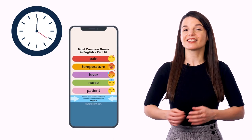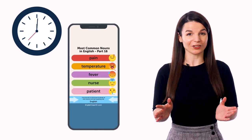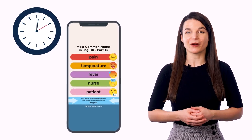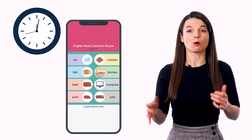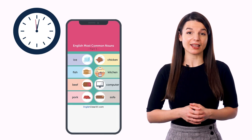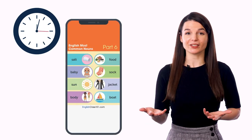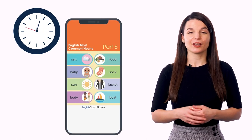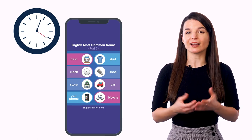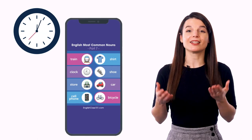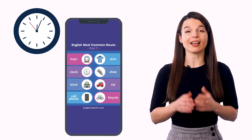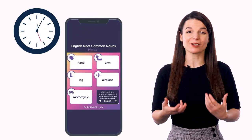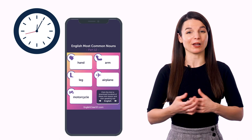Second, decide when you'll learn. Most of us pull out our phones to waste time and swipe around while we're on the bus or train, while waiting for someone, or while on the couch. Think about when you're most likely to do this and designate that as learning time, just so your brain automatically knows when to learn.